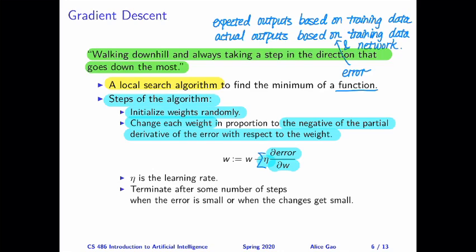So I've just described one weight update. And we're going to potentially do this weight update many times. So gradient descent is an iterative method. And after some number of steps, when the error is small enough, or when the changes in the weights are really small, then we can decide to terminate.